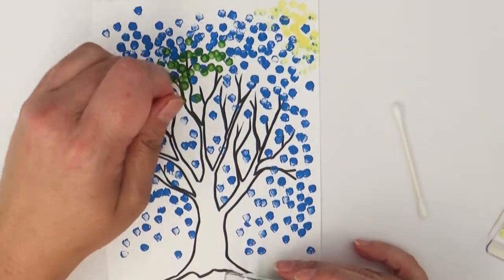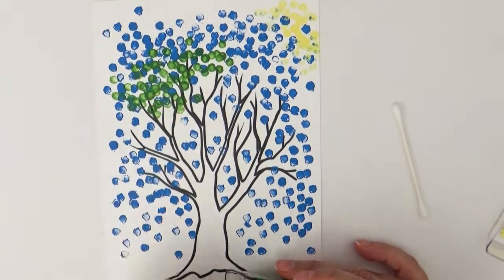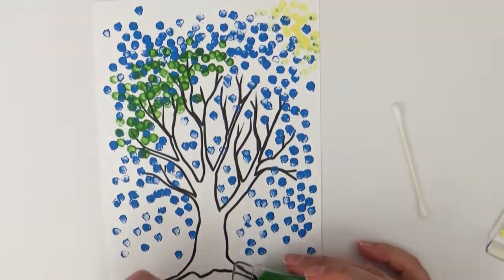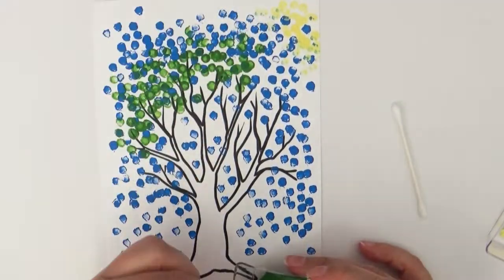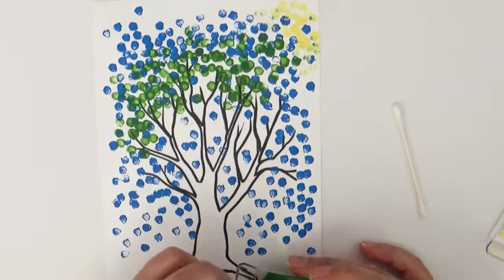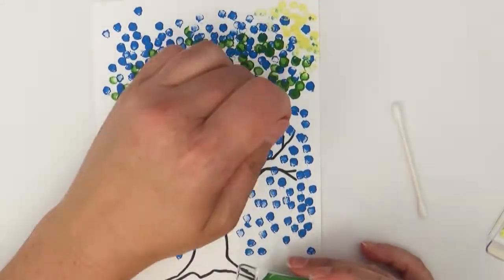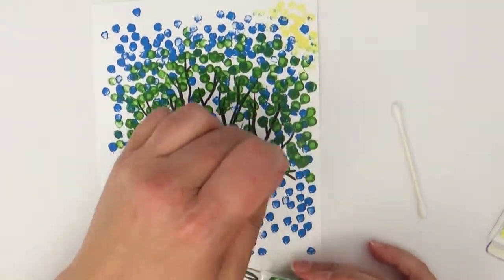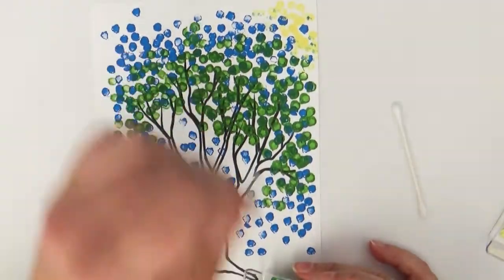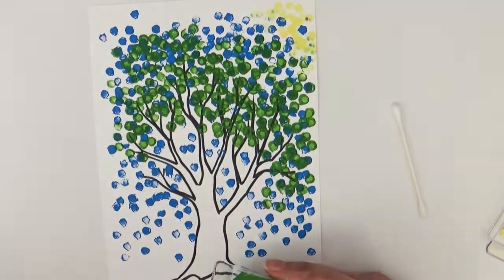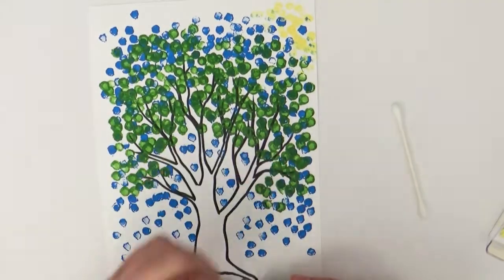Now like I said before you can mix and match your colors. Just use a different q-tip for each color so that you're not always getting brown because fun fact if you mix all these colors together you're probably going to get brown. As I layer my green dots on top of the blue sky you'll begin to see the leaves of the tree beginning to unfold. I'll also add some green dots below for some grass.